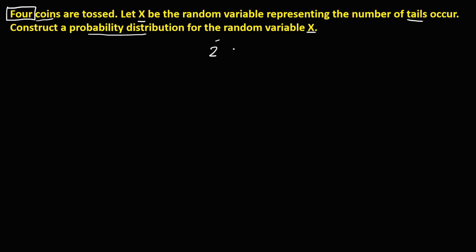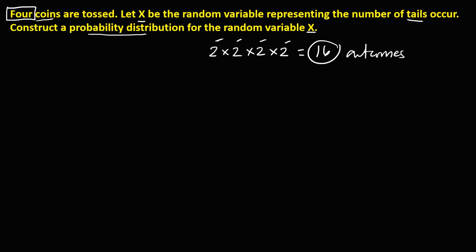So these are the four coins: 1, 2, 3, 4. And to find the total possible outcomes, we multiply all these sides. So we have 2 times 2 times 2 times 2. So 2 times 2 is 4, and 4 times 2 is 8, and 8 times 2 is 16. So therefore, the total possible outcomes is 16.